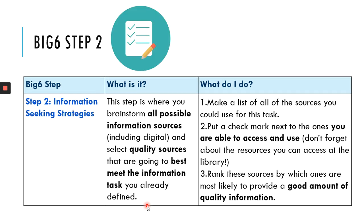Big Six step two: information seeking strategies. So this is where you brainstorm all the possible information sources you could use, and then select the quality sources that best meet the information task that you are going to have to successfully complete.